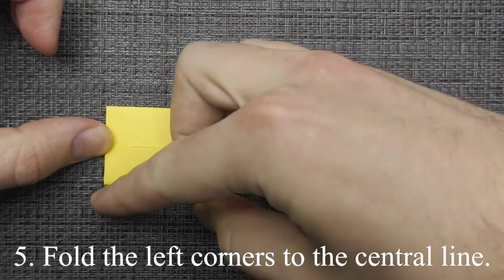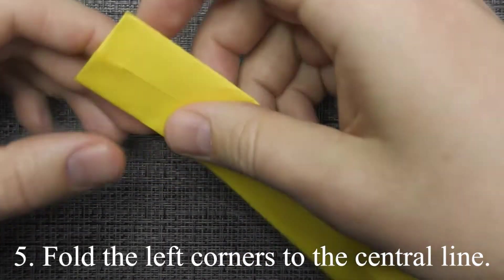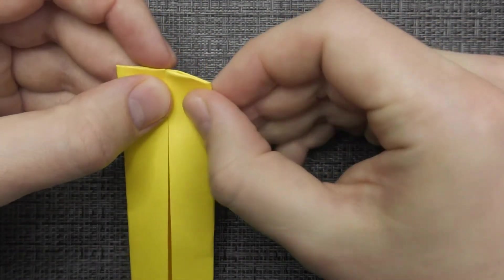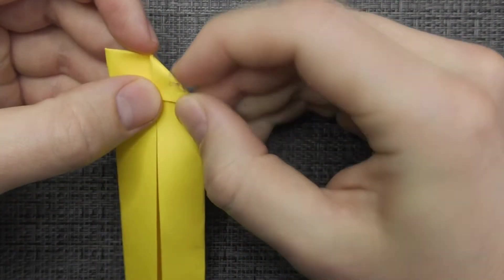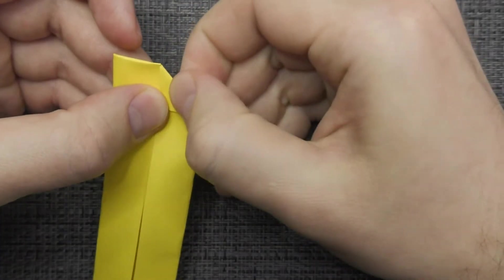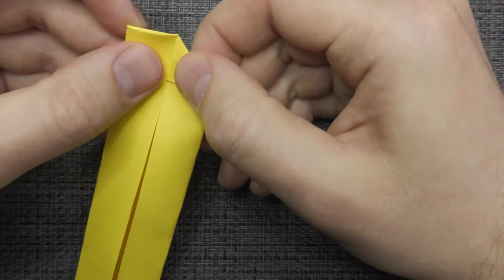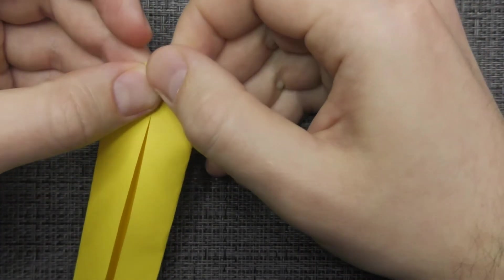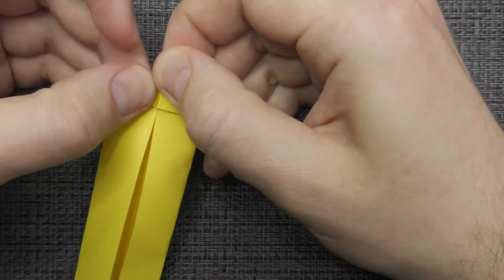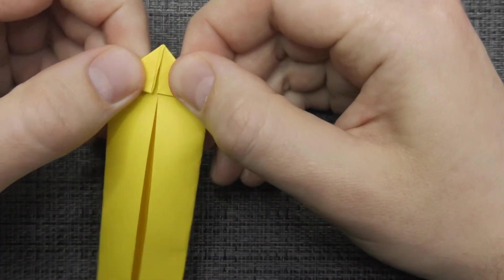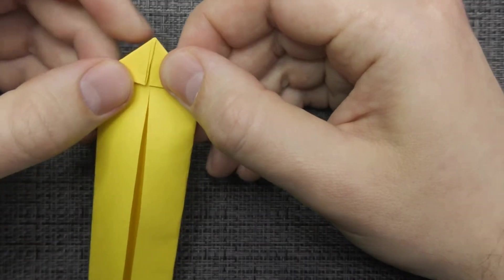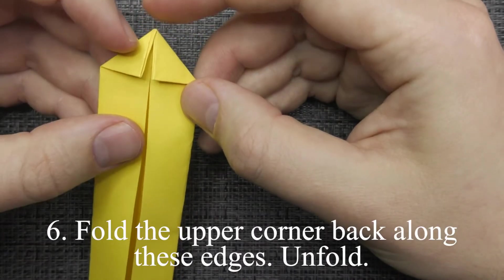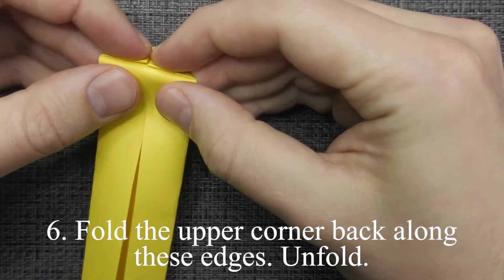Fold the left corners to the center line. Fold the upper corner back along these edges. Unfold.